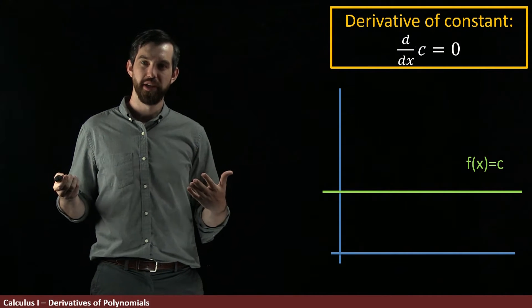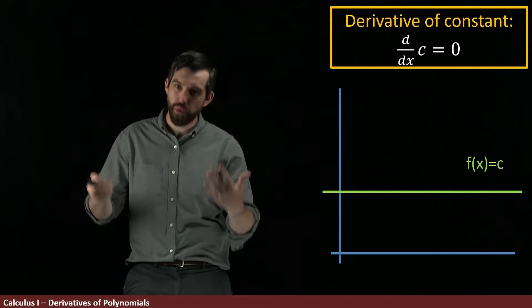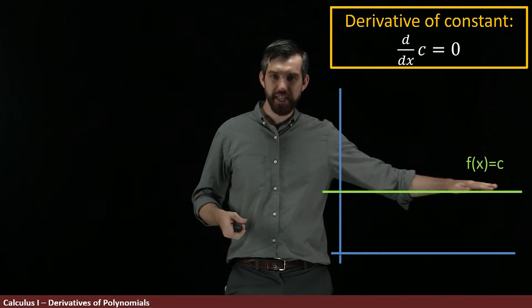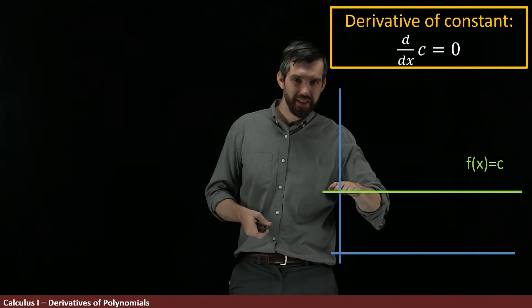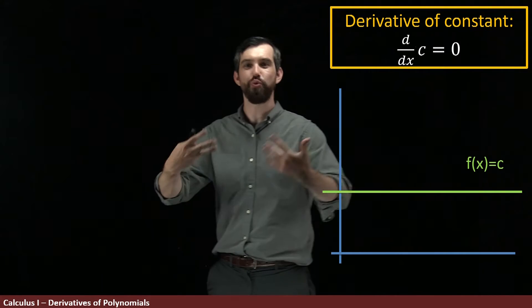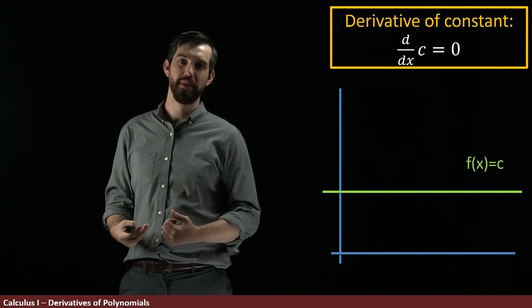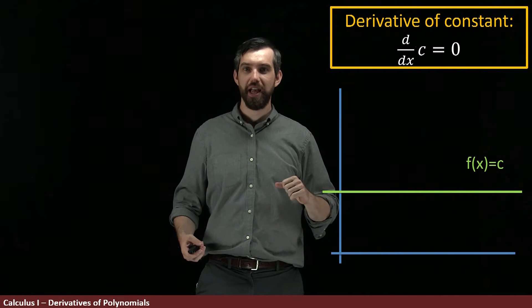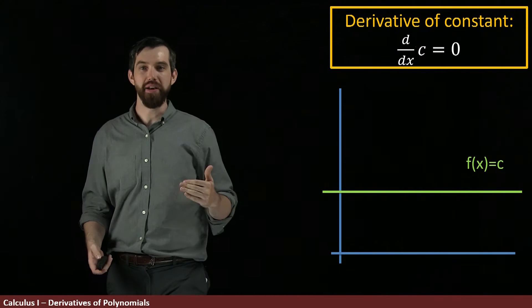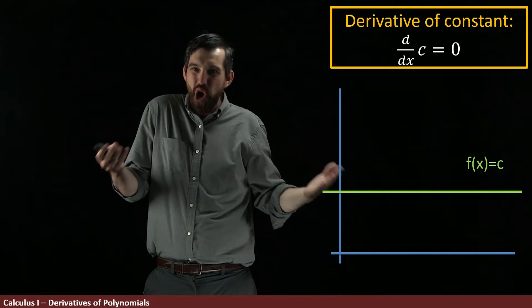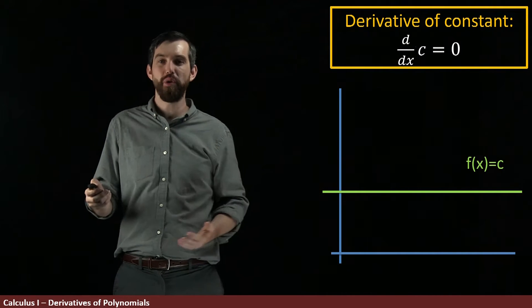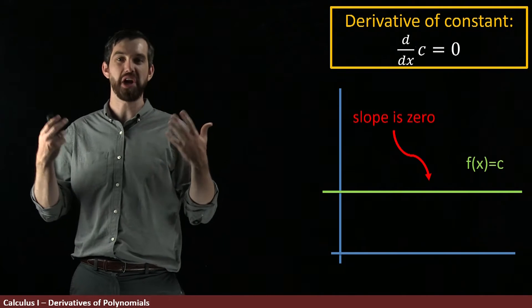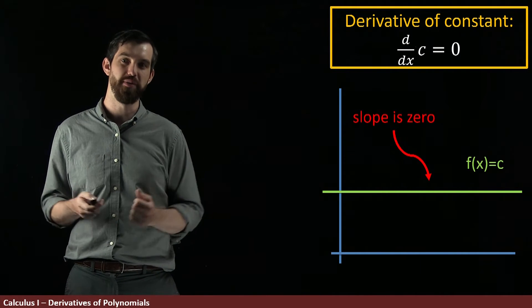Now what's the derivative? Geometrically, we've seen that the derivative is the slope of the tangent line. Well, if my function is this, the tangent line is just lying directly on top of the function. So the slope of the tangent line, which is the derivative, is rise over run. Because it's horizontal, there's no rise, and so the slope is zero. That's how I was able to compute that the derivative of a constant function is just zero.